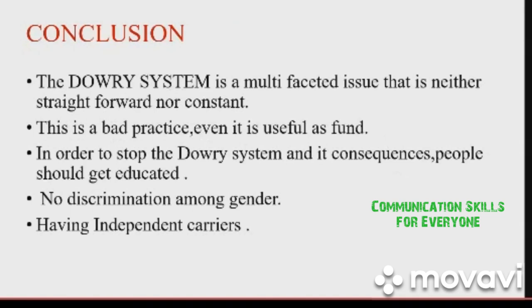The dowry system is a multifaceted issue that is neither straightforward nor constant. In order to stop the dowry system and its consequences, people should get educated, there should not be any discrimination among genders, and men and women should have their independent capabilities so that they don't have to depend on dowry. Thank you!